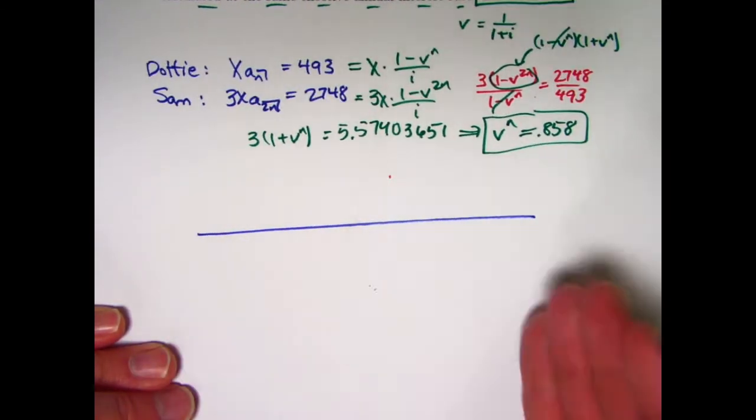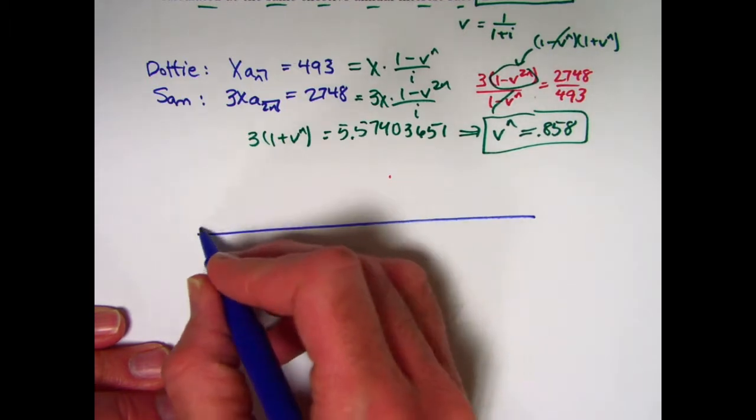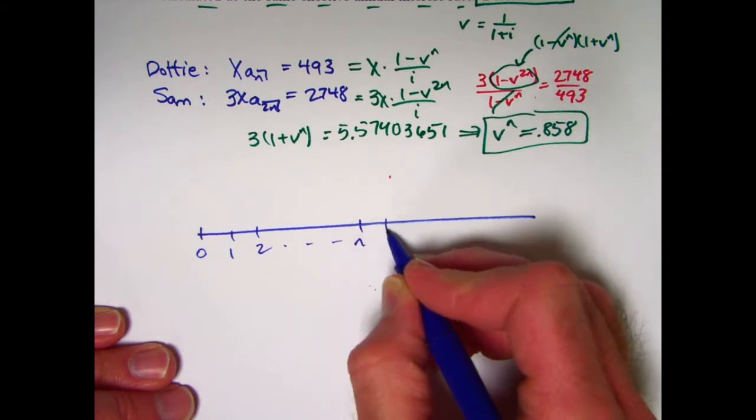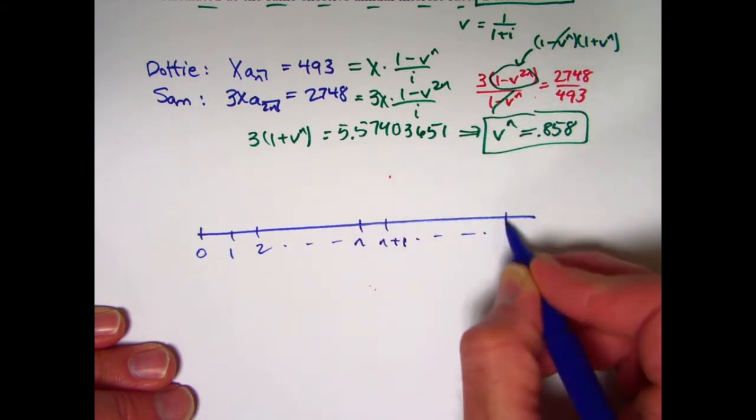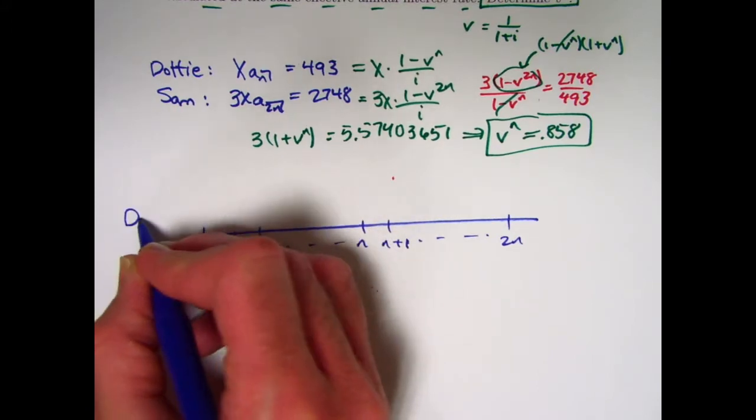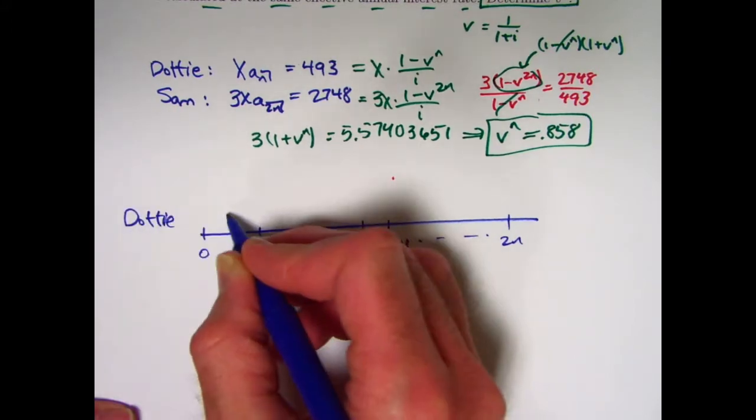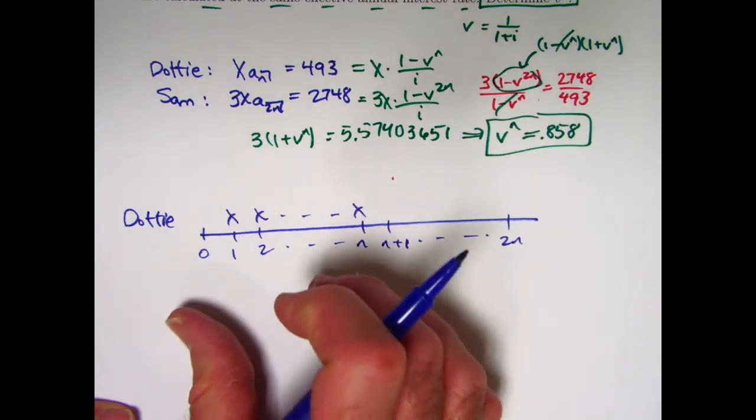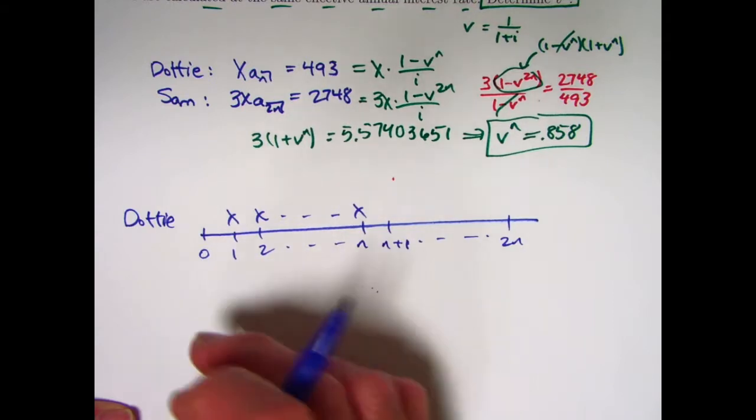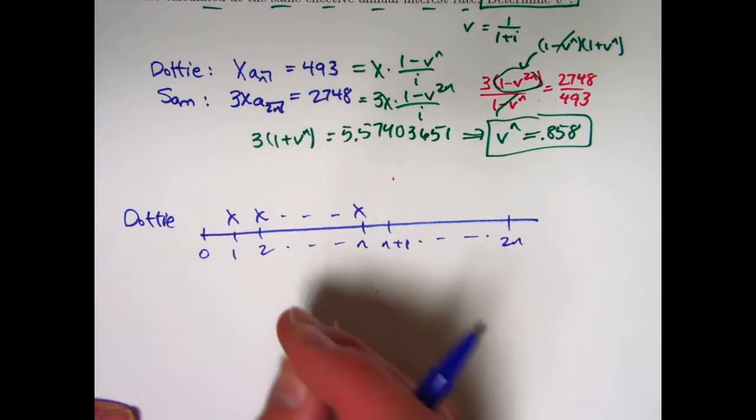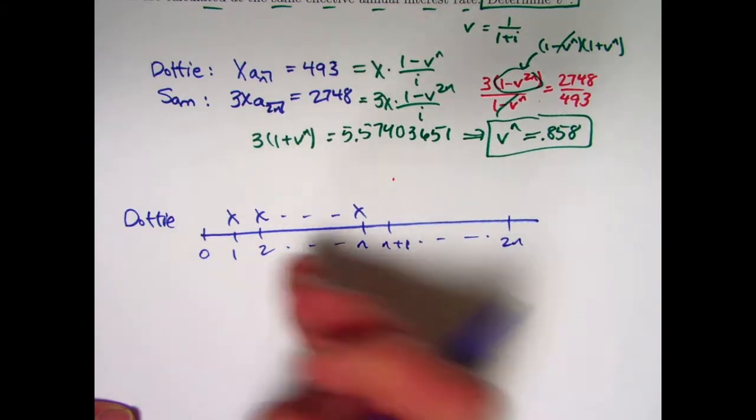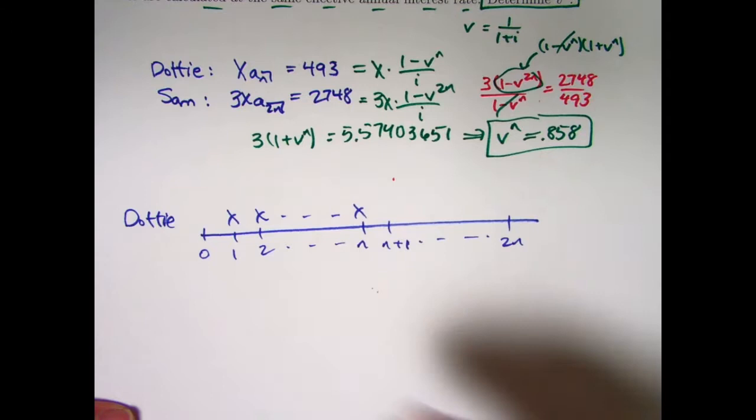I'm thinking about either promoting or discounting amounts. There's time 0, time 1, time 2, up to time n. And we also want to go up to time 2n. We've got Dottie's payments of x at the end of each year for n years. When you think of that as an annuity immediate, if you're thinking about this as being time 0 and the first payment being at the end of the first year, you also can think of it as annuity immediate, even if time is not 0 at the moment. If you're finding the present value one year before the first payment, that can still be thought of as an annuity immediate.